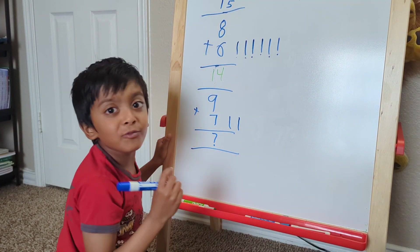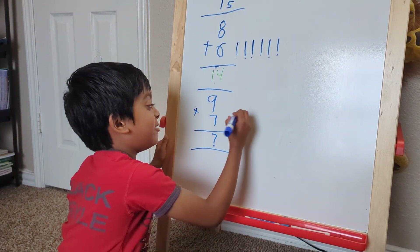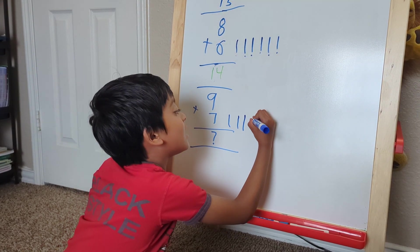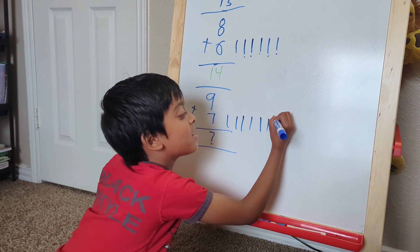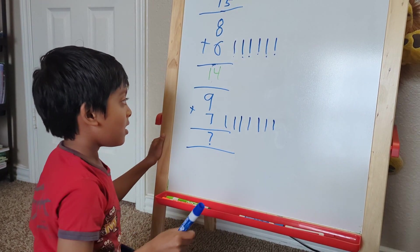1, 2, count with me. 1, 2, 3, 4, 5, 6, 7. Now,